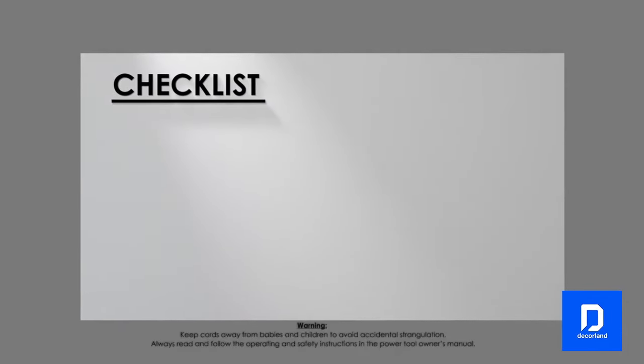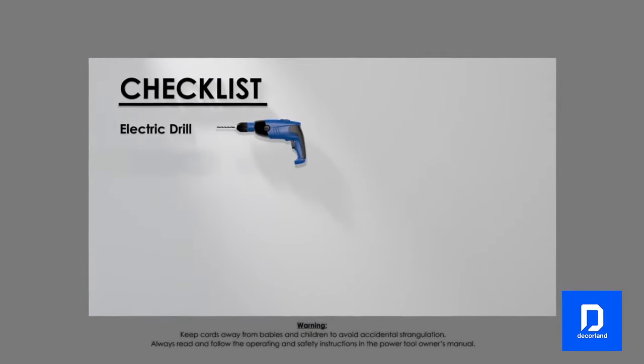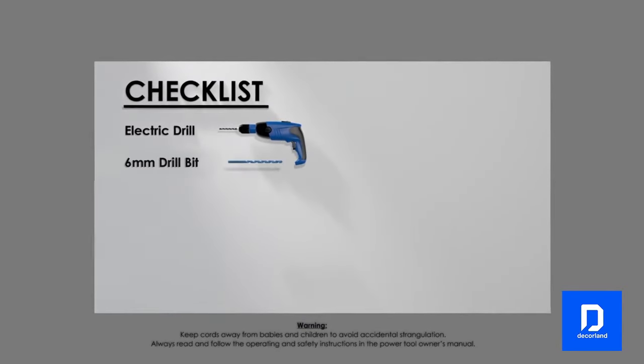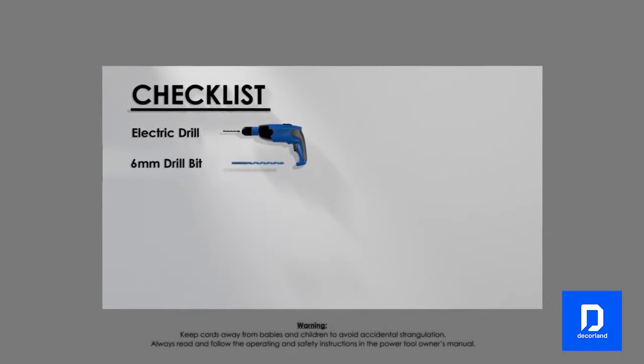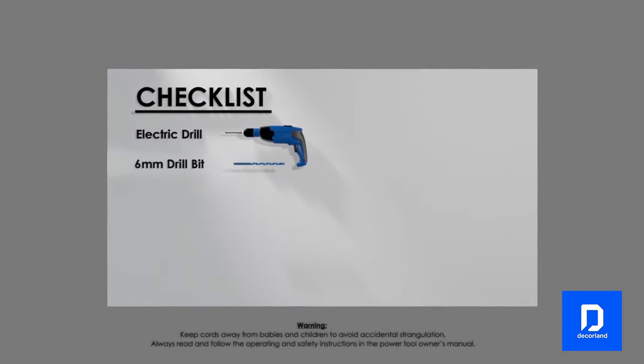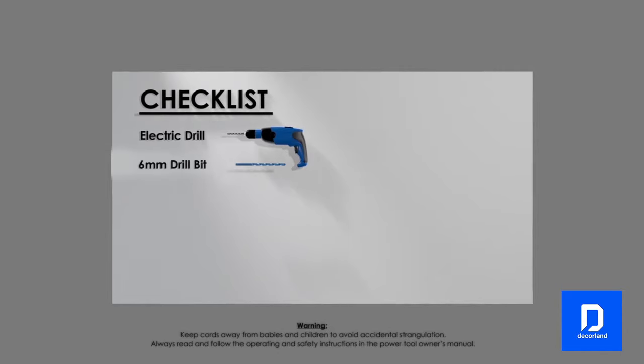Here is a checklist of what you'll need for the installation. An electric drill with a 6mm drill bit. For brick and concrete surfaces use a masonry drill bit. For wood surfaces use a steel drill bit.